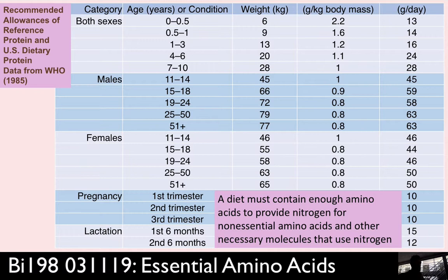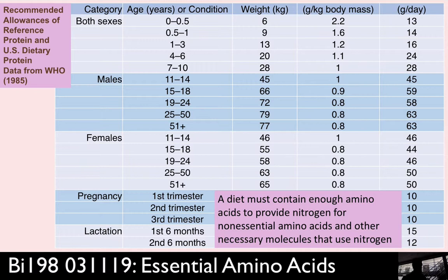You can imagine those transporters like a turnstile at a subway. Off-peak, people just go through with no wait. But during rush hour — like eating a big meal of protein — there's a crush of amino acids in the tubular fluid trying to get resorbed. If you've exceeded the transport capacity, those amino acids just get excreted in the urine.